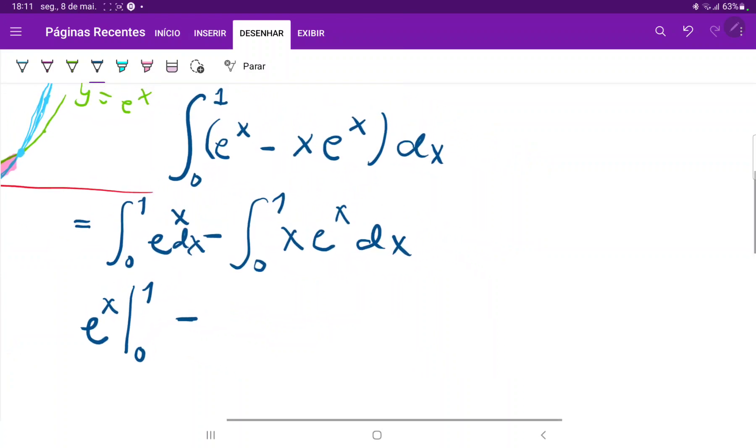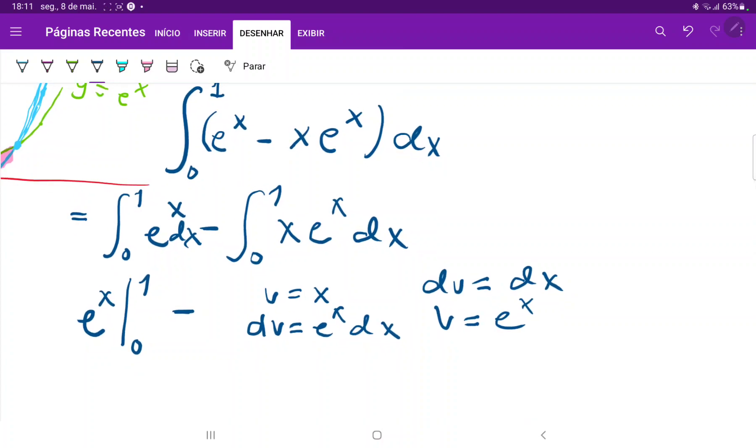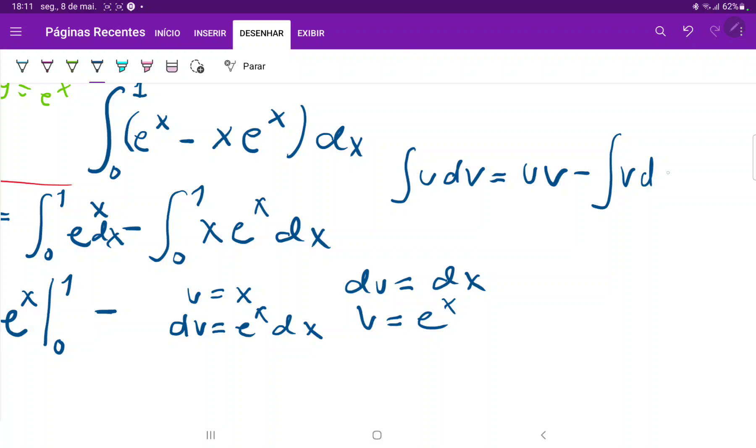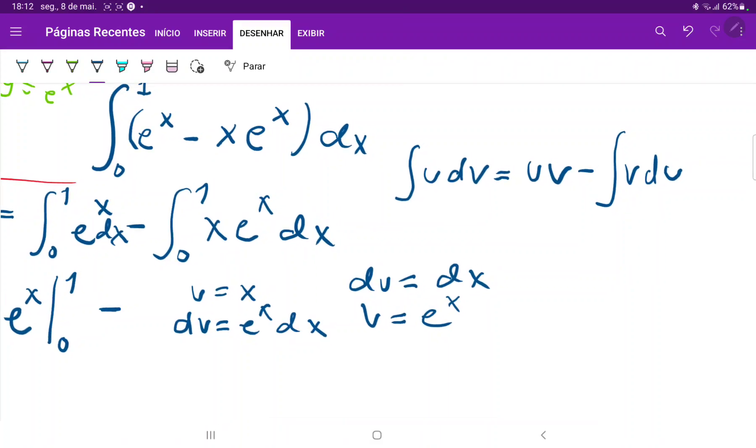For this one, we're going to call our u is equal to x, and our dv is equal to e to the x dx. So then our du is equal to dx, and then our v is equal to e to the x. And if you're ever confused in how you're going to make these choices, like which one is u and which one is dv, let me put this in the formula. So this is integral of u dv is equal to uv minus the integral of v du.